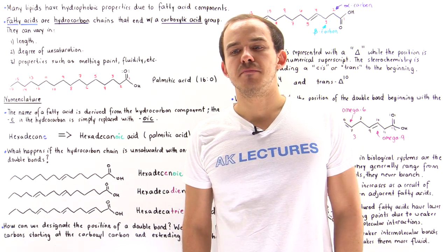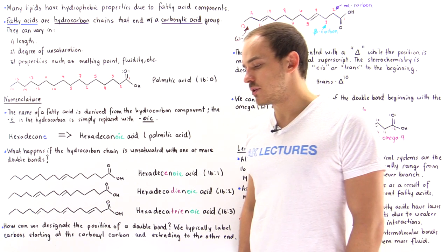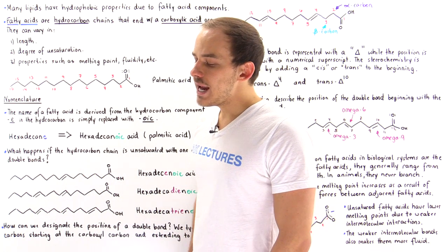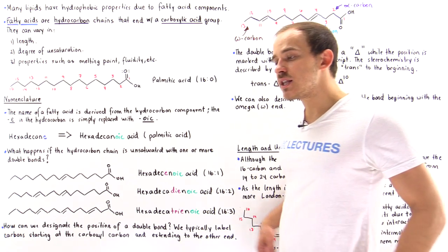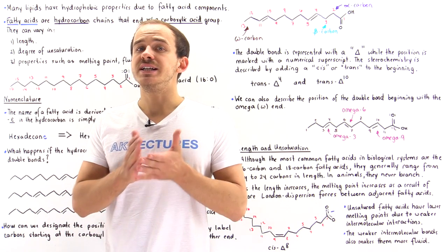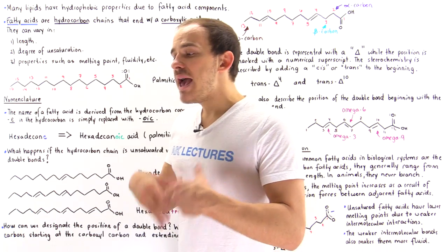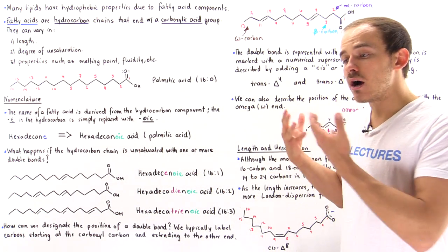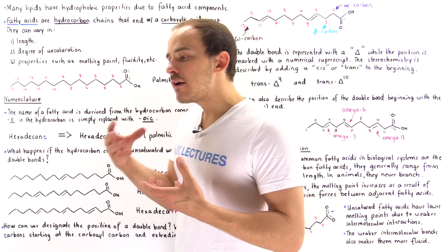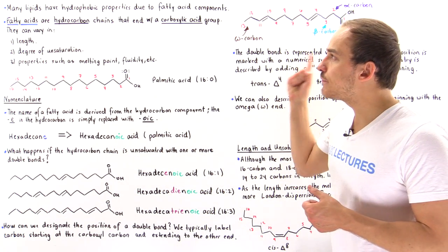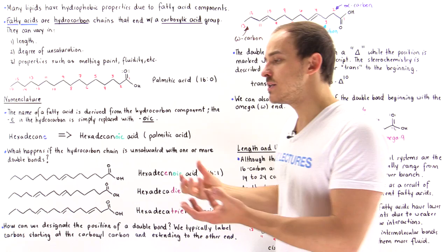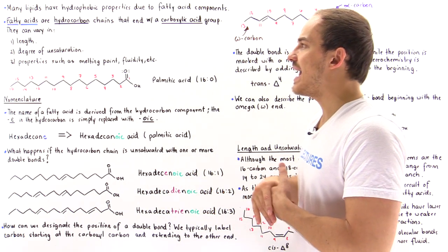In nature there are many different types of lipid molecules. By definition, a lipid molecule is a biological molecule that is not soluble in water — it does not dissolve in an aqueous environment. That's because the majority of a lipid molecule consists of a nonpolar, hydrophobic section. Many lipids inside our body contain a hydrophobic section known as the fatty acid, which makes the lipid hydrophobic and nonpolar, keeping it insoluble in an aqueous environment.